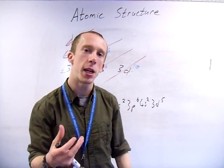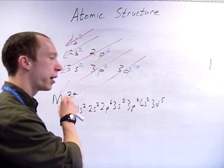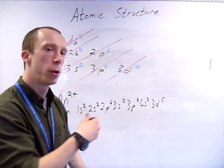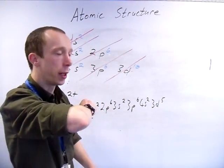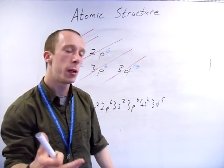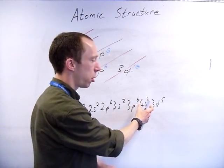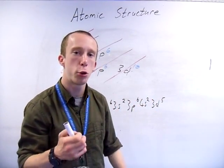So the mistake what people make time and time again with this is they'll think 25 electrons initially, 2+ take away 2 = 23, and then they'll fill up normally. What you would end up doing with that is you would get 4s2 3d3. That is incorrect.